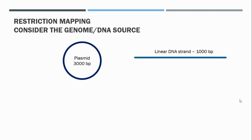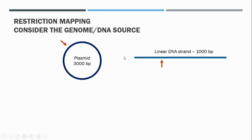Before we continue with the actual process of restriction mapping, I'd like you to consider two scenarios. This is the genome or source of DNA we're looking at in our restriction mapping study. On the left we have a circular plasmid which is 3000 base pairs, and on the right we have a linear DNA strand. Consider that we are cutting both with one restriction enzyme that has just a single restriction site in each case.